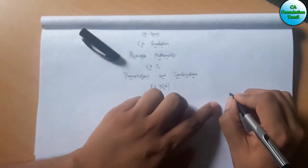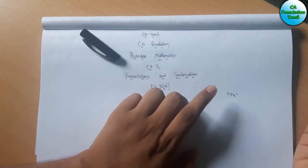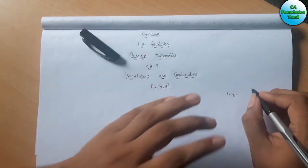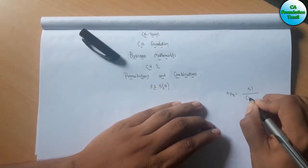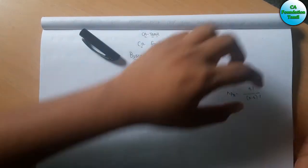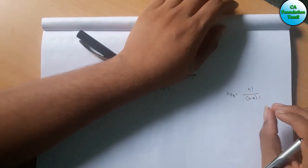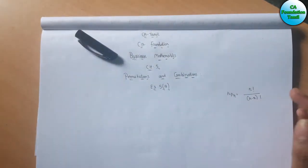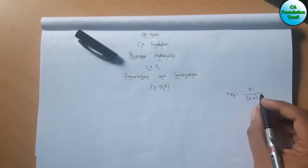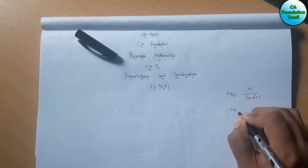The first common formula is NPR. This is the formula. The formula is N factorial divided by N minus R factorial. So NPR equals N factorial divided by N minus R factorial. We use this formula.